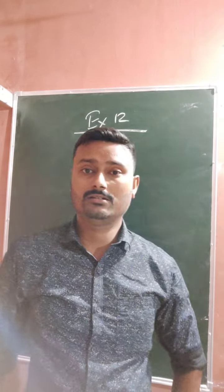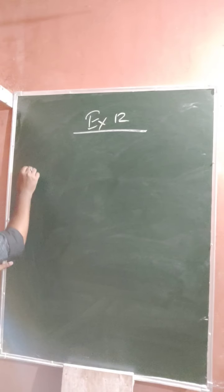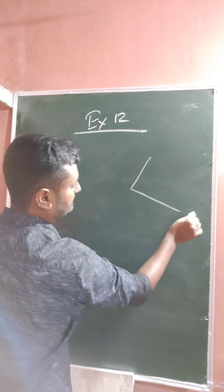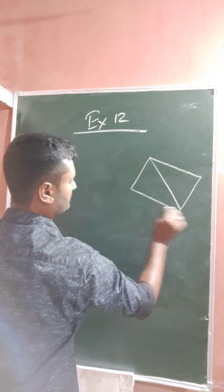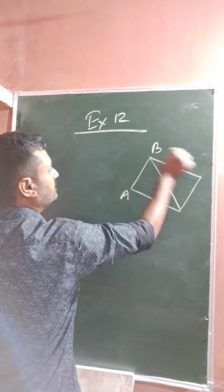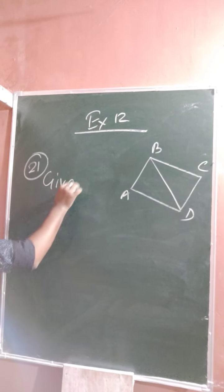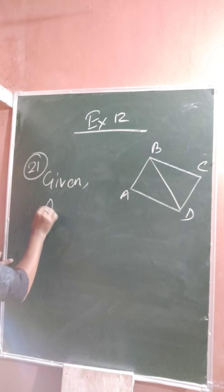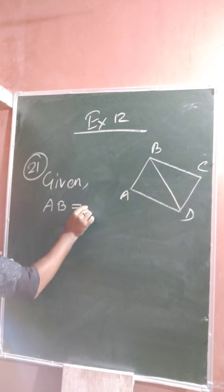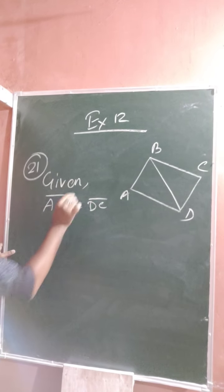Okay, so let us start today's class from XSS 12, question number 21. So first we have to write the given things. Given: AB equal to DC. That is the convert symbol — AB equal to DC.